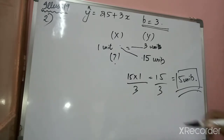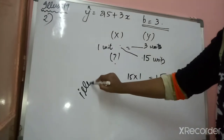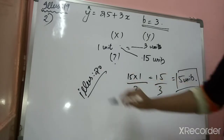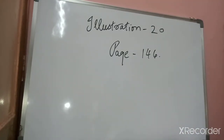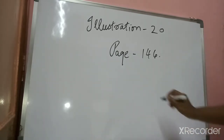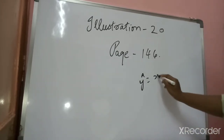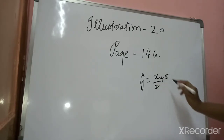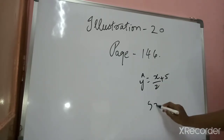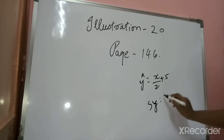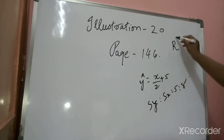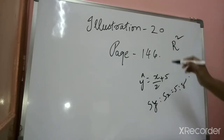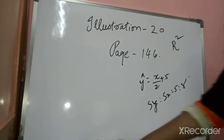Now let's move on to illustration number 20. The question says: if the regression line of Y on X is Y cap equals X by 2 plus 5, and SY to SX is 5 to 8, find the coefficient of determination, that is capital R². These are short sums that may come in your exam, so try to score more marks on them.